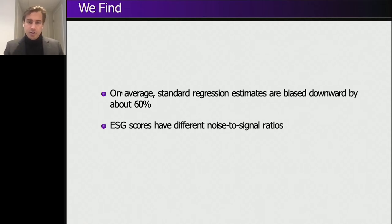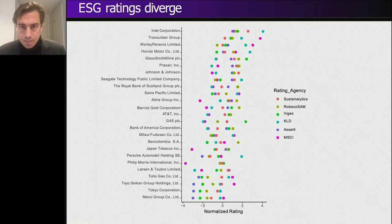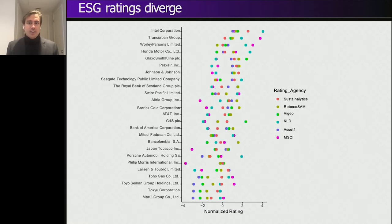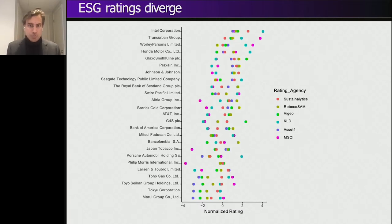Now I'm going to tell you why we believe ESG ratings are noisy. First, let's look at ESG ratings divergence. Between ESG raters, there's a lot of disagreement. There's a graph showing the disagreement between six different raters — from our previous paper 'Aggregate Confusion: The Divergence of ESG Ratings.' As you can see in what we call the confetti plot, the assessments are all over the place. All those ratings are normalized, and some have a difference of more than five standard deviations, which is very, very large.